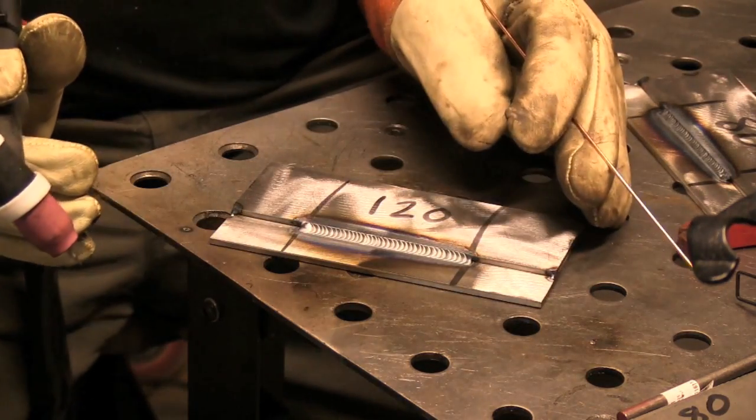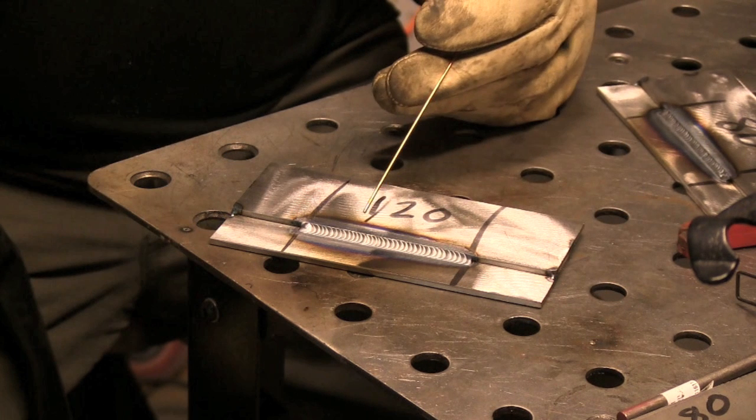You can see right away that the extent of this coloration is less. So I've got less heat input here with 120 than I did using only 80 amps. Right away we can see that amperage isn't the only thing that affects heat input.